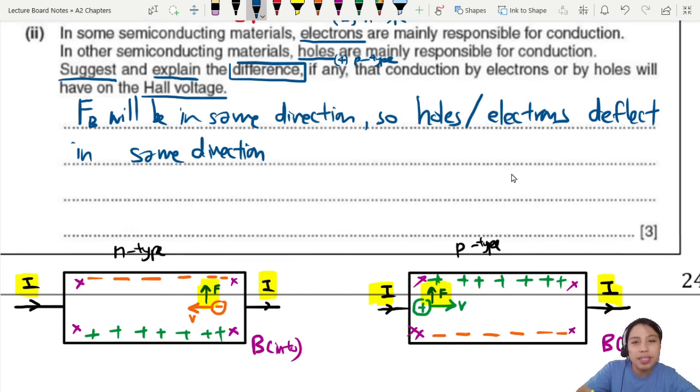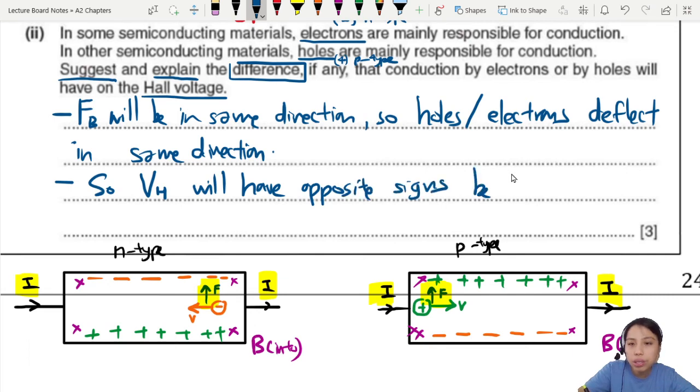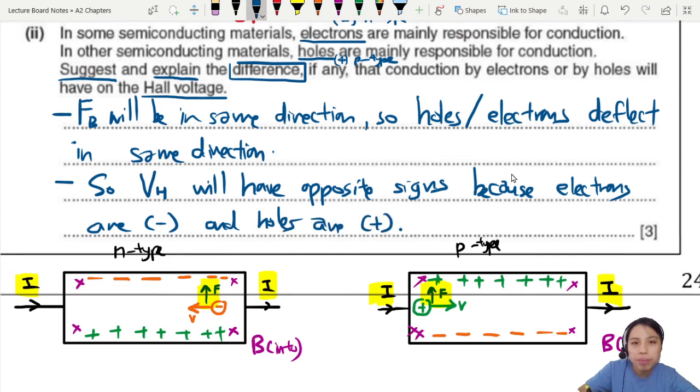Whether they are hole or electron. But the difference is in the N type or P type, the majority charge carrier composition is different. So that's what the next point we're gonna say. There are different deflection. Either a hole go up or an electron go up. It depends what you have more. What is your majority charge carrier in your material. So then we say, so the Hall voltage, VH, will have opposite signs depending on what material it is. Opposite signs because you need to talk about what the sign of electron and holes are. Because electrons are negative and holes are what we call the positive charge.